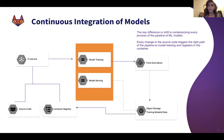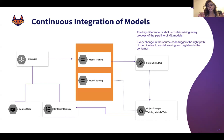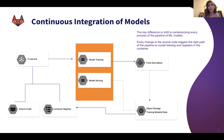Now we look into the technicalities of machine learning operations — how do you actually use DevOps CI for models? Continuous integration automates and orchestrates from training to testing to deployment. That is the key shift in using CI/CD of models. The main part is containerizing every process of the ML model pipeline, so every change in the source code triggers the right path of the pipeline to model training and registering in the container — all of that automated, orchestrated, and linked through a CI service.